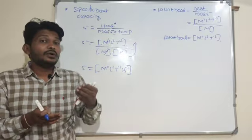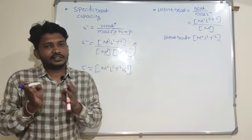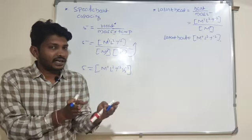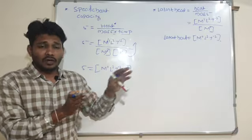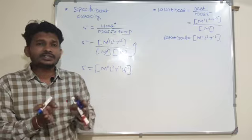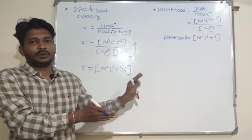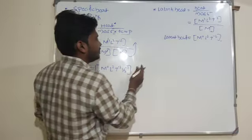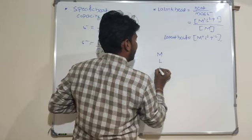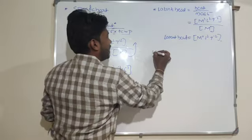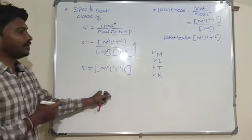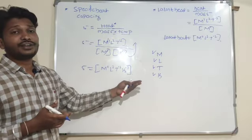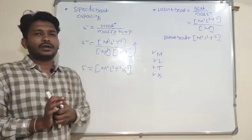In second PU we will understand electromagnetic theory, where one more term — current — can be used. But for first PU chapter, maximum times you can use these terms only: M, L, T and K — mass, length, time and temperature in terms of Kelvin. By taking use of these fundamental physical quantities, we can write the dimensional formula for all derived physical quantities.